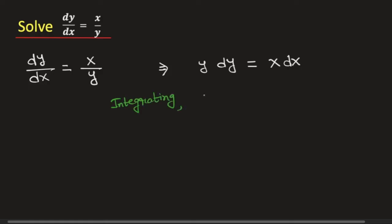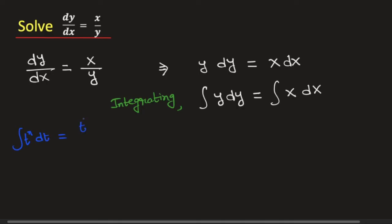Integrating, we will have the integration of y dy is equal to the integration of x dx. To solve this integration, we will use the power rule of integration. The rule says that the integration of t to the power n dt is equal to t to the power n plus 1, divided by n plus 1.